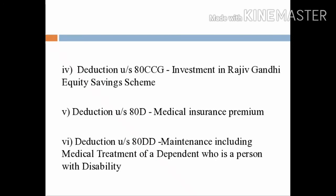Deduction under section 80DD — it is the deduction in respect of maintenance including medical treatment of a dependent who is a person with disability. That is, the disability of a person who is dependent on the assessee. The assessee claims the deduction for maintenance including medical treatment under section 80DD.